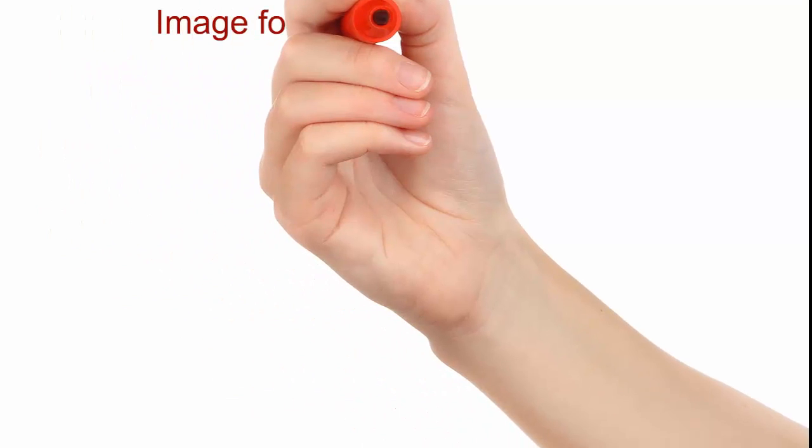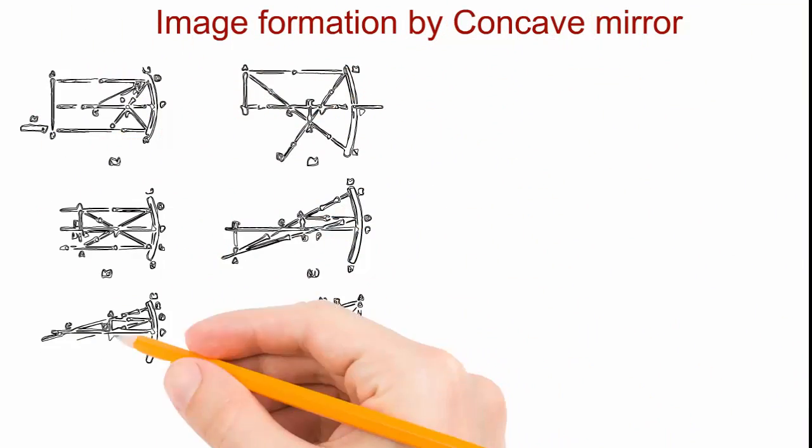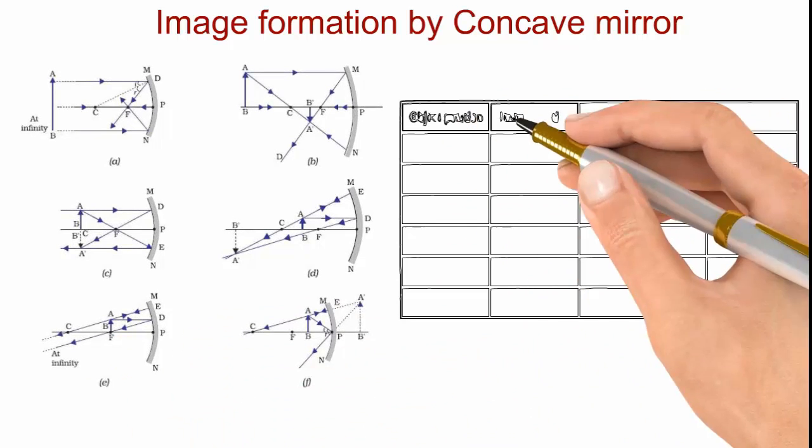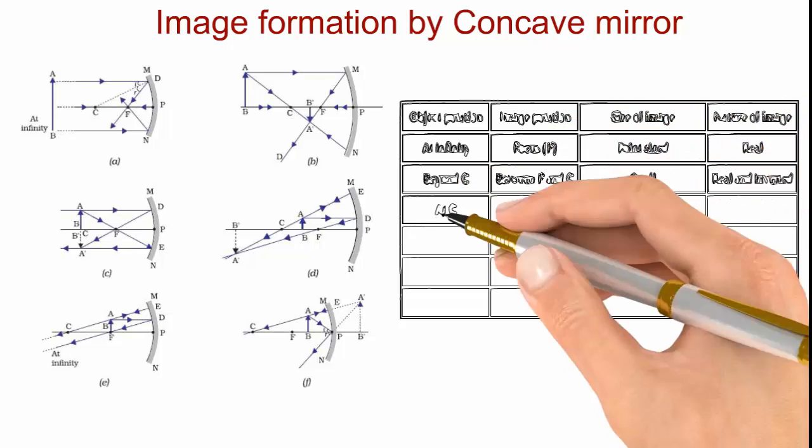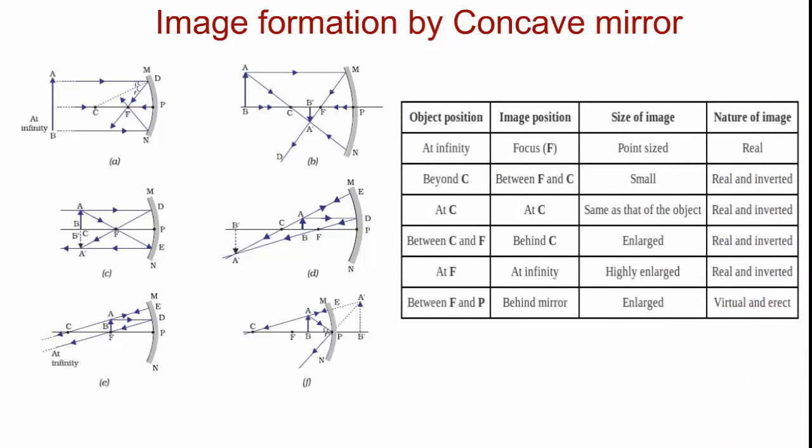Now you can see image formation by concave mirror at different positions of objects. It will be better if you can relate such reflections of light with the earlier discussed reflection of curved surface and carefully observe how rays of light is reflecting and how image is formed in various cases. Have a look at this. You can observe from the ray diagrams and the table that how and where images are formed at various positions of object.